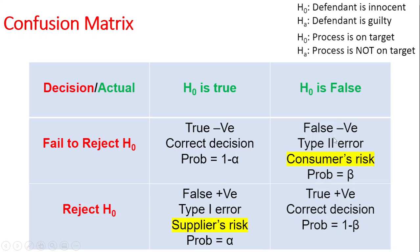Usually when doing hypothesis testing, the power must be chosen such that if you want to detect a difference with a certain level of accuracy, you need to make sure both alpha and beta values are chosen appropriately so you can perform the necessary experiments. In my next video, I'll be showing using JMP how to calculate the sample size required for a one-sample t-test.